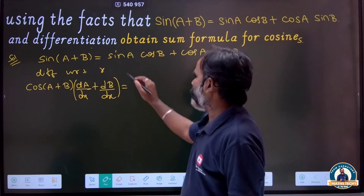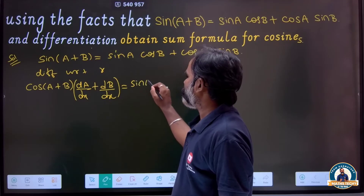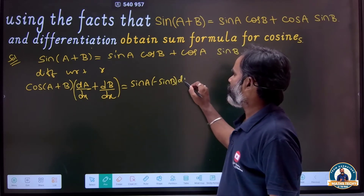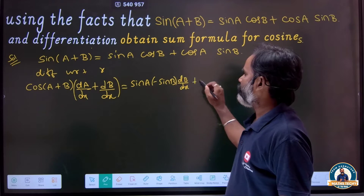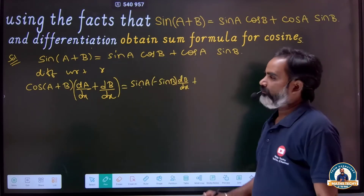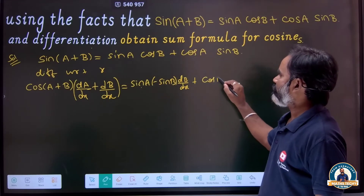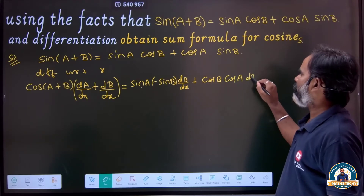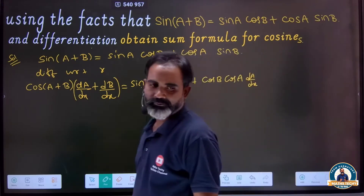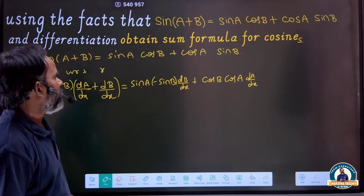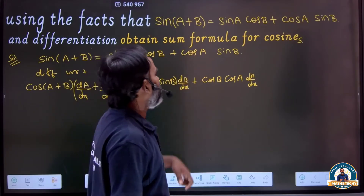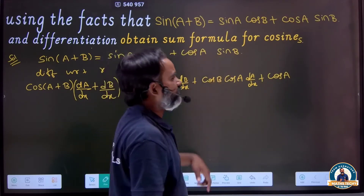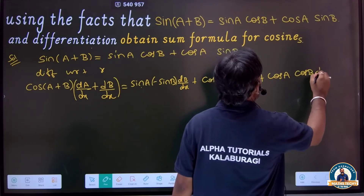Now apply the product rule to the expanded form. First function as it is, differentiation of cos b gives minus sin b, times db/dx. Plus second function as it is, differentiation of the first: cos a gives minus sin a times da/dx. Then product rule again: cos a as it is, differentiation of sin b gives cos b times db/dx.